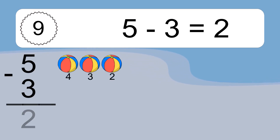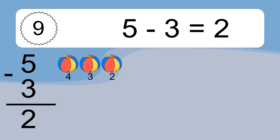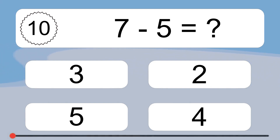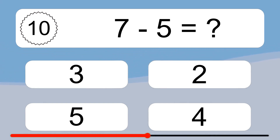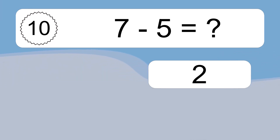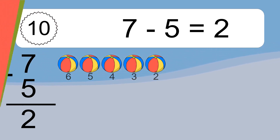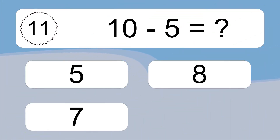5 minus 3 equals 2. Let's count it: 4, 3, 2. 7 minus 5 equals what? 7 minus 5 equals 2. Let's count it: 6, 5, 4, 3, 2.